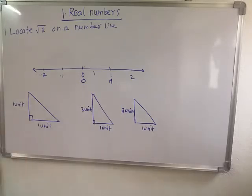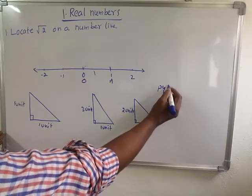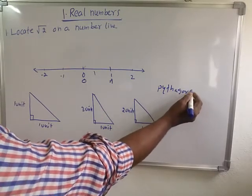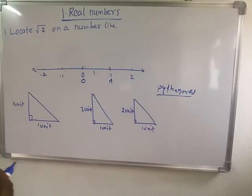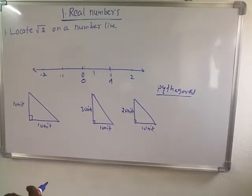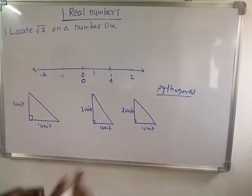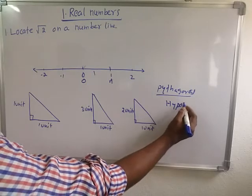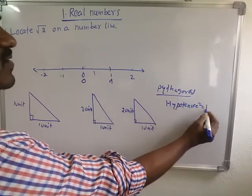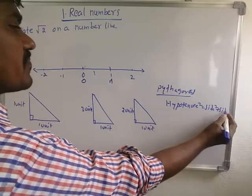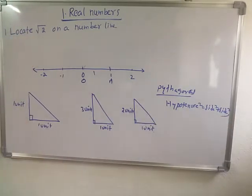First of all, you know Pythagoras' theorem. So what is Pythagoras' theorem? In a right-angle triangle, hypotenuse squared is equal to side squared plus side squared. This is Pythagoras' theorem.